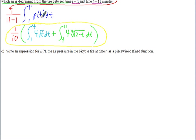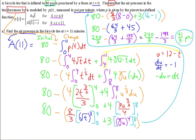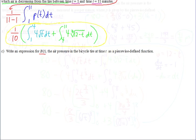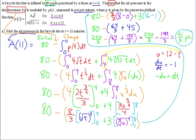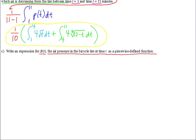For the last part, they're calling the original function B of t — that represents the air pressure of the bicycle tire at time t as a piecewise defined function. It's similar to our initial-plus-change setup, except before we only found it at t equals 11. Now we want to use this function for any time. So we're going to have two pieces, since we have two pieces to our piecewise rate function. They both have the initial amount of 80 in common.